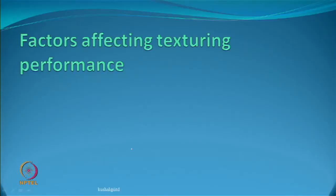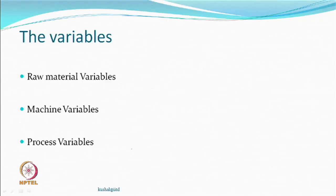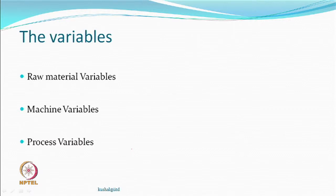Now we look at the factors that affect the properties of the textured yarn. With a complex machine, there are raw material variables — what material is being texturized — machine variables, since many zones and parts play a role, and actual process variables which are in the texturing zone where you have more control. You may or may not have control over raw materials, but you should understand their effects and how the machine behaves.